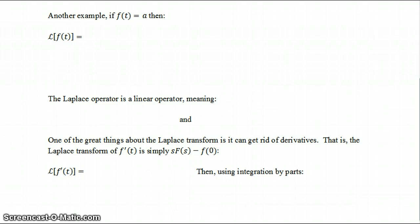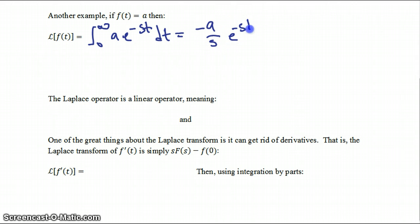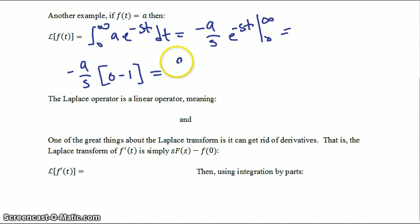As another example, if the function you're taking the Laplace transform of is just equal to a constant a, then the Laplace transform is the integral of a times e to the minus st dt, which equals minus a over s times e to the minus st evaluated from 0 to infinity, giving a over s.